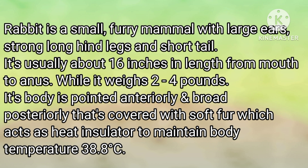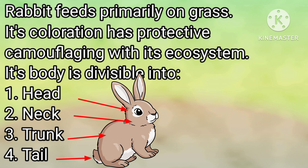Rabbit is a small furry mammal with long ears, strong long hind legs and short tail. It is usually about 16 inches in length from mouth to anus. Its weight is 2-4 pounds. Its body is pointed anteriorly and broad posteriorly, covered with short fur which acts as heat insulation to maintain body temperature of 38.8 degrees Celsius. Rabbit feeds primarily on grass. Its coloration is protective, camouflaging with its ecosystem.